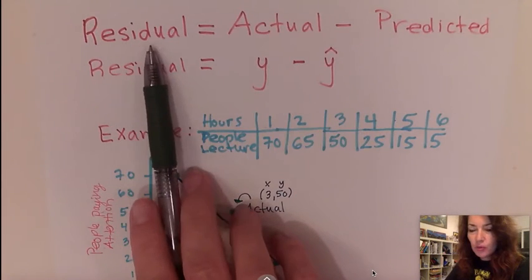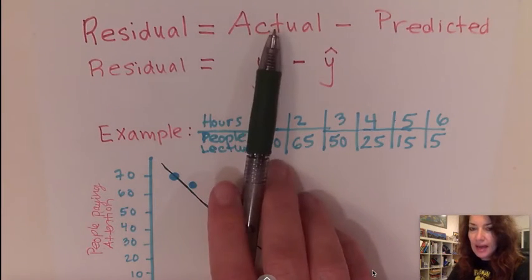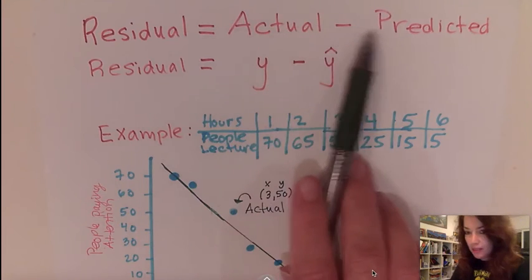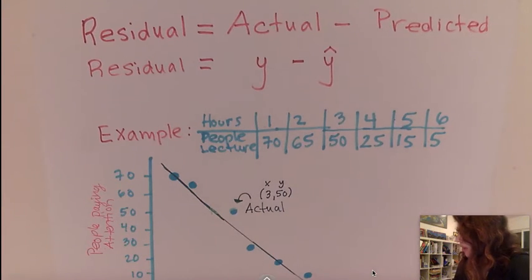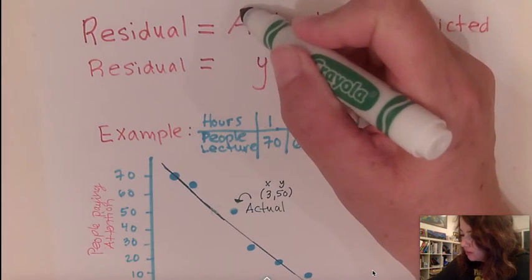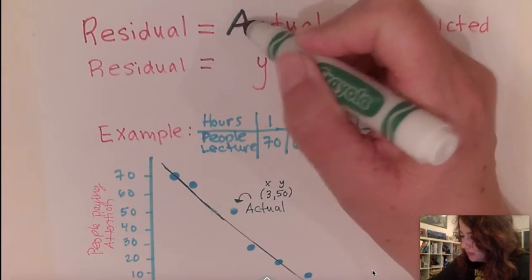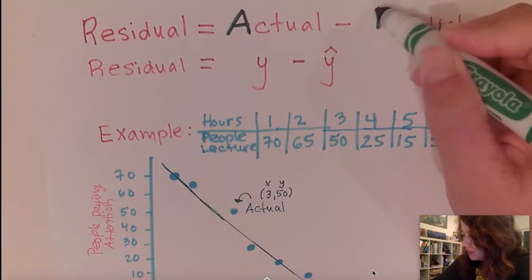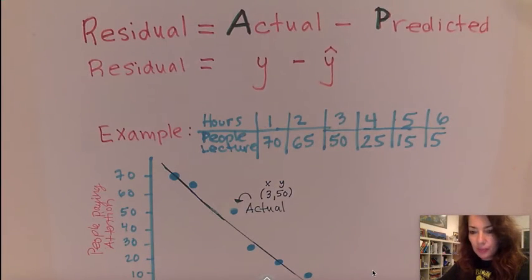So first of all, a residual is given as an actual point minus a predicted point. So actually it is the actual minus predicted and one way you can remember it is AP. So it's always the actual minus the predicted.